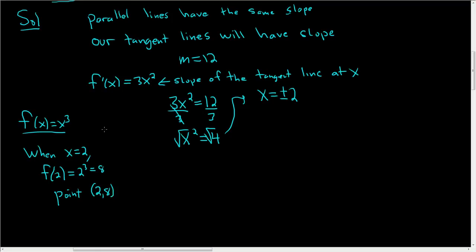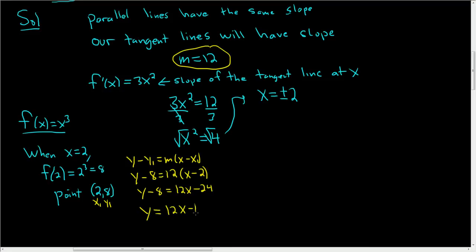Now we can use the point-slope form of a line: y - y₁ = m(x - x₁). So y - 8 = 12(x - 2). Distributing: y - 8 = 12x - 24. Adding 8 to both sides gives us y = 12x - 16. So there is our first tangent line.